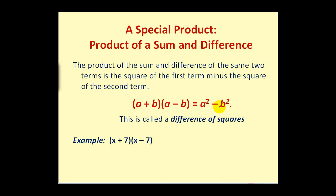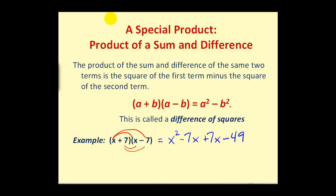Let's do this one the long way and then recognize the pattern. We multiply X times both terms in the second, then we multiply 7 times both terms in the second. X times X equals X squared; X times negative 7 would be negative 7X; positive 7 times X would be plus 7X; and positive 7 times negative 7 would equal negative 49. What's special about this product is that the two like terms will always be opposites when we have the sum and difference of the same two terms. Therefore the result equals X squared minus 49. Notice the first term is X squared and the second term is 7 squared, and it will always be a difference.